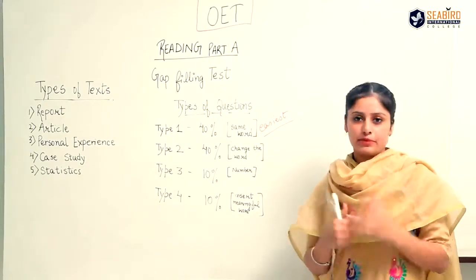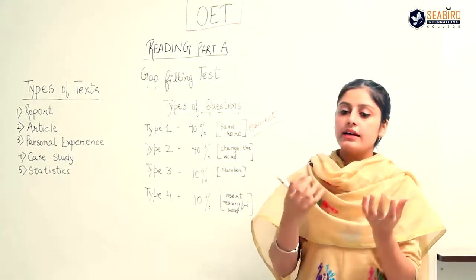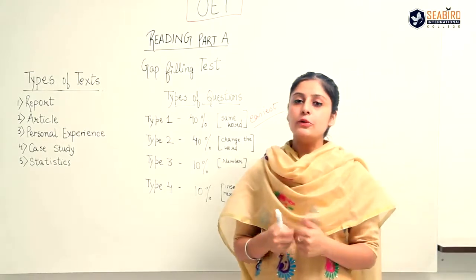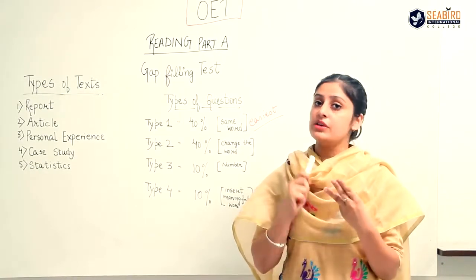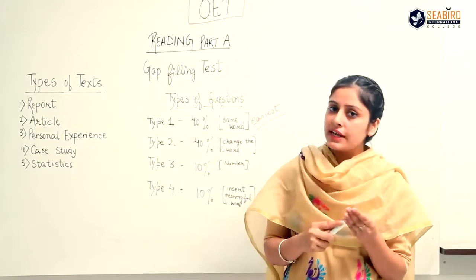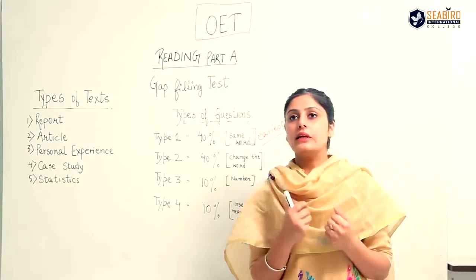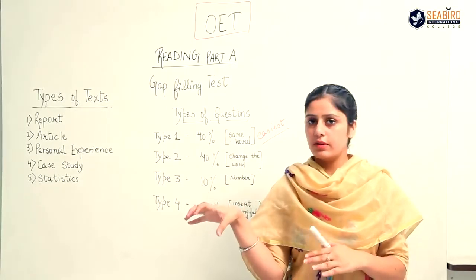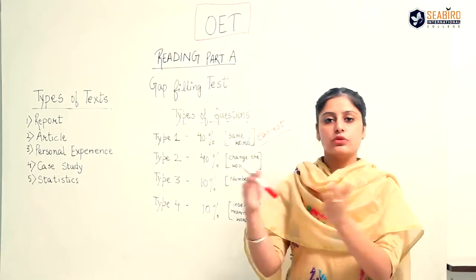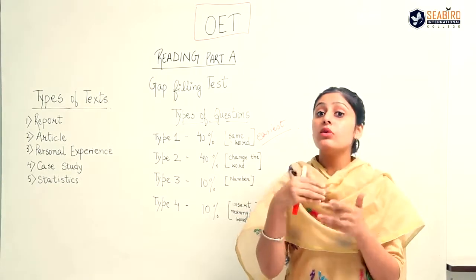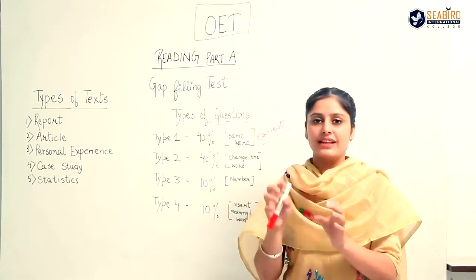Type 3 questions carry 10% weightage and involve numbers. You may need to use a date, a year, a time, number of hours, or a percentage — or sometimes transform numbers into text. For example, 50% is 'a half,' 25% is 'a quarter,' 55% is 'more than half,' and 31% is 'just over 30%.' You need to transform numbers this way.